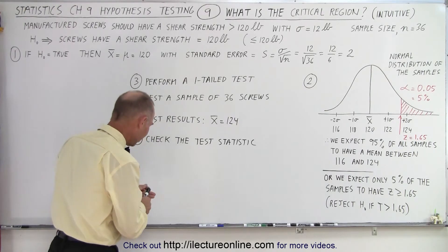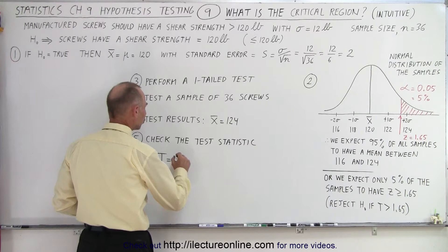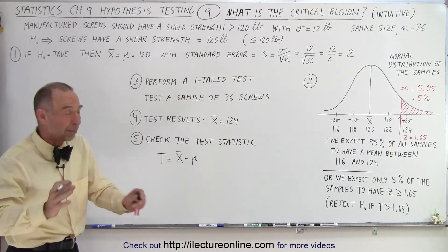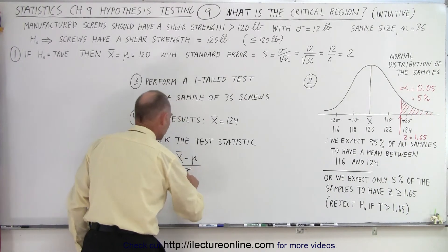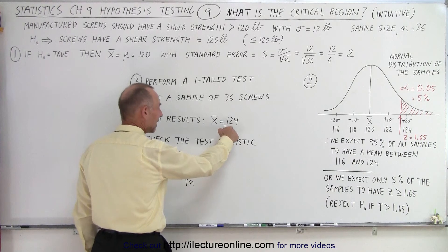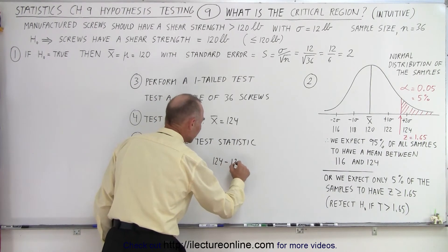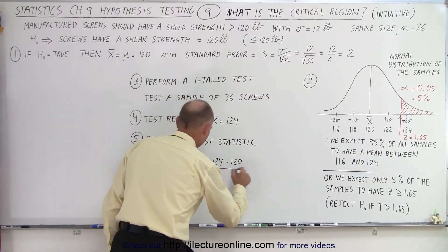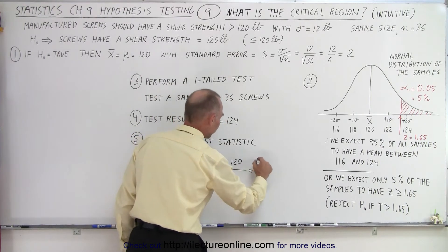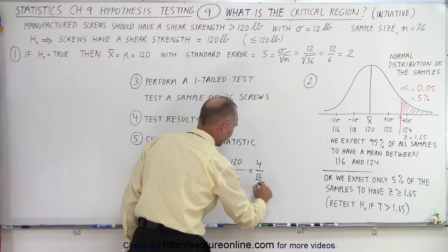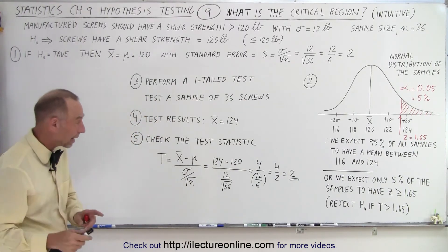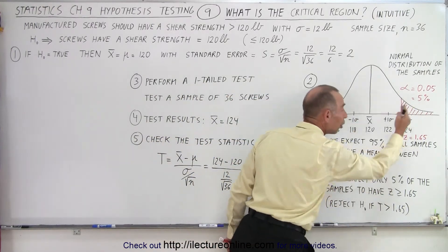We calculate the test statistic T, which is equal to the mean of the sample minus the mean of the population assuming the null hypothesis is true, divided by the standard deviation of the population divided by the square root of the sample size. In this case, that's 124 minus 120, divided by 12 divided by the square root of 36. That equals 4 divided by 12/6, which is 4 divided by 2, equaling 2. So the test statistic T equals 2, and we compare that to the Z-score of the edge of the critical region.